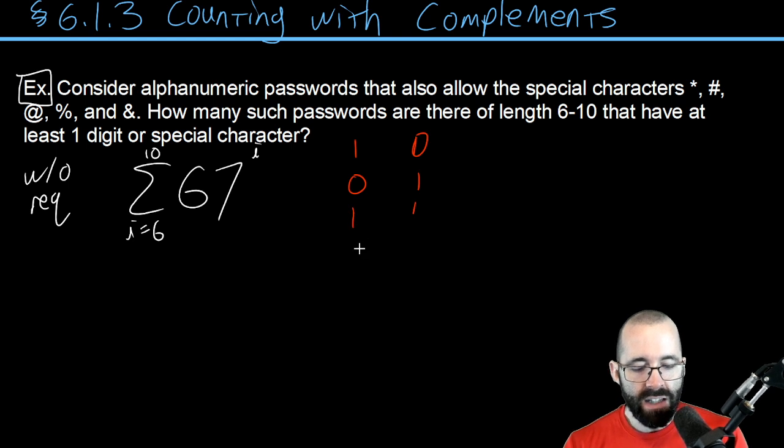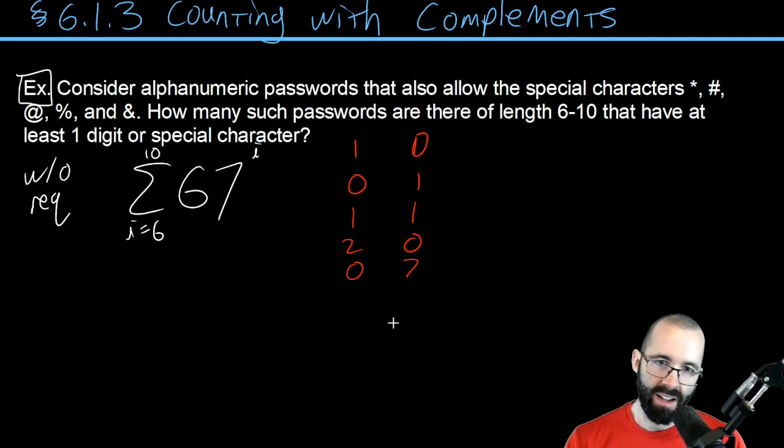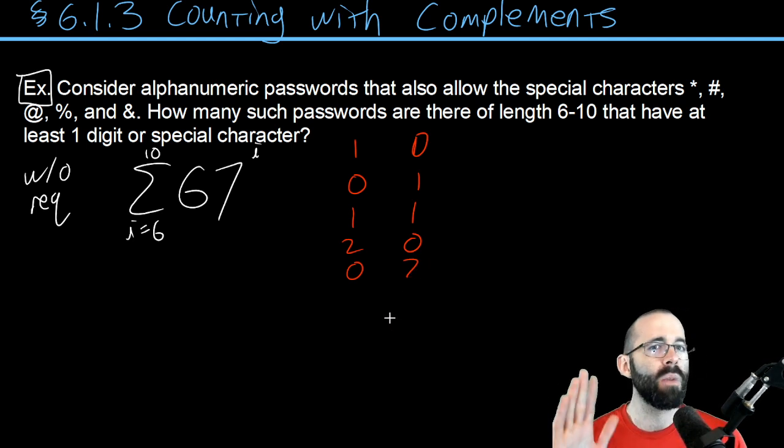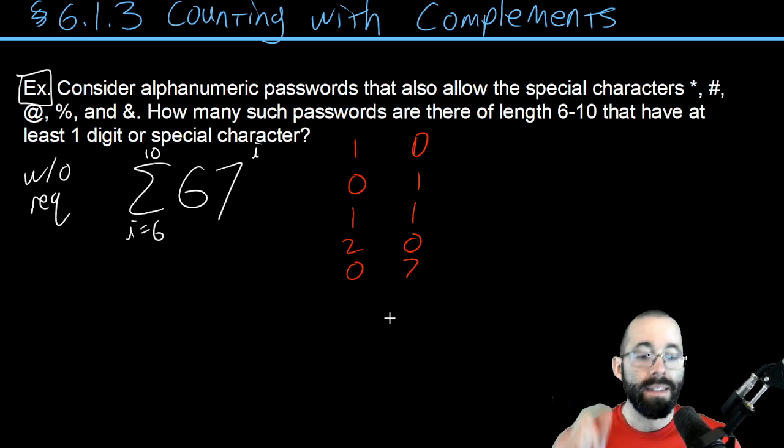We could have one digit and one special character, one digit and no special characters, no special characters and one digit. We could have one of each, we could have two of one and none of the other. There's so many ways that this can happen, and we have combinatorial ways of dealing with this.